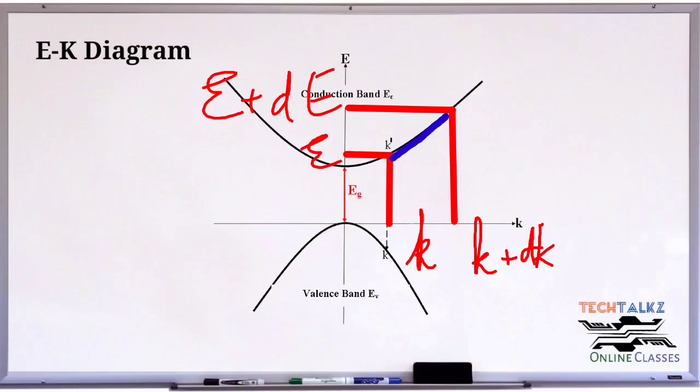The number of states means the number of points we get between k and k plus dk, and they are the same as the number of points between E and E plus dE. Therefore, rho k will be equal to rho E.